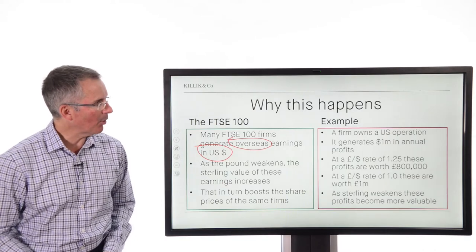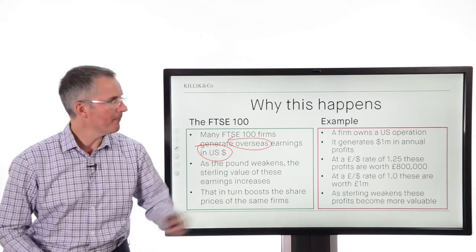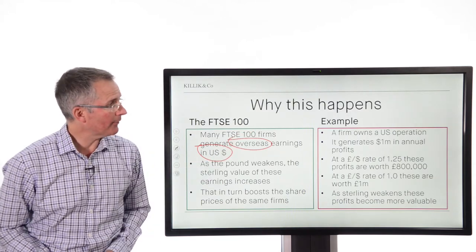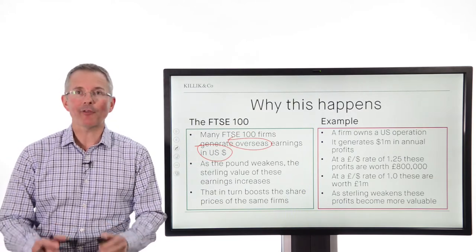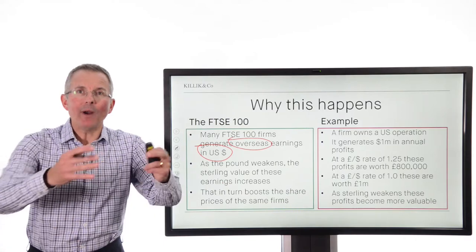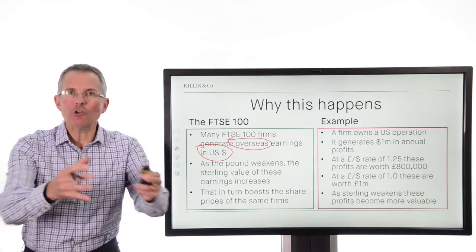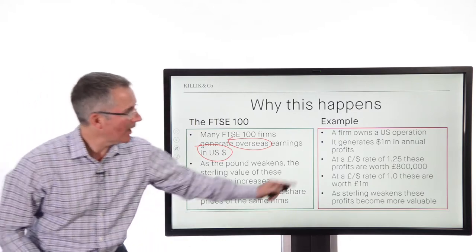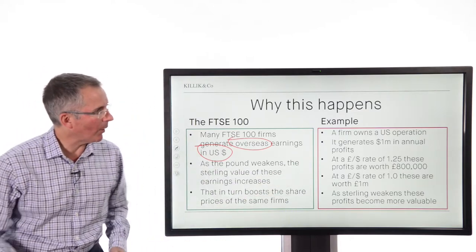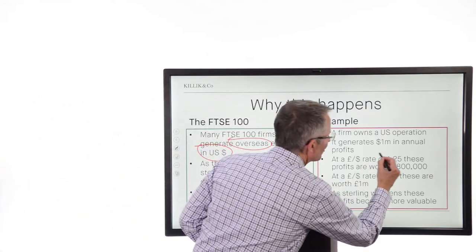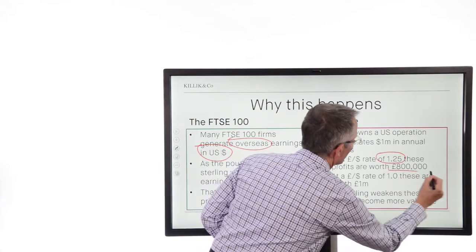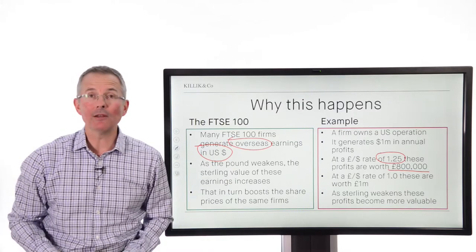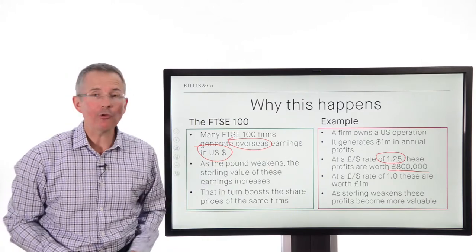Just to explain that in a bit more detail with a simple example: a firm owns a US operation, so it generates $1 million in annual profits in the US. When it brings those back into sterling — which is where it's listed — in order to report those earnings, at a pound-dollar exchange rate of 1.25, those profits are worth around £800,000. In other words, simply dividing the million dollars by 1.25.